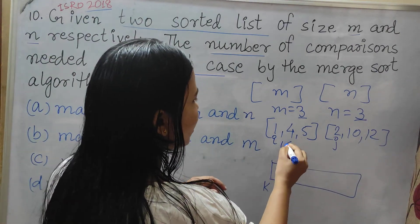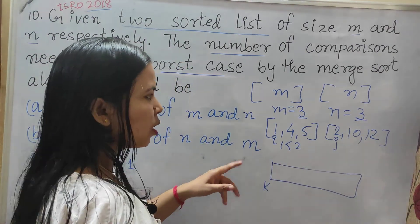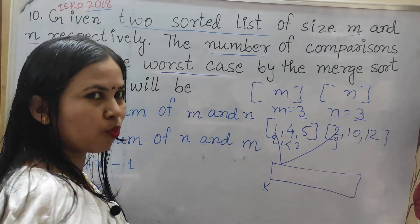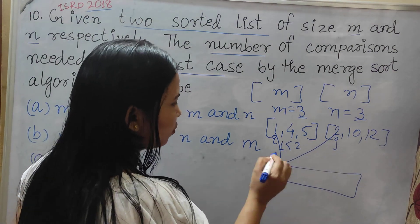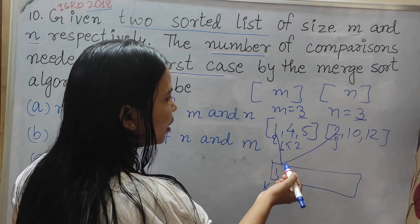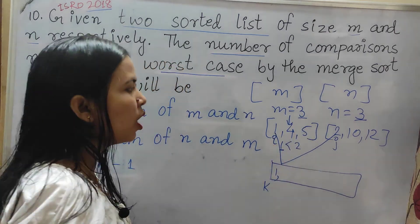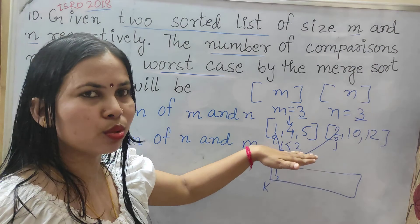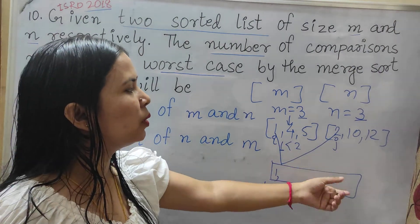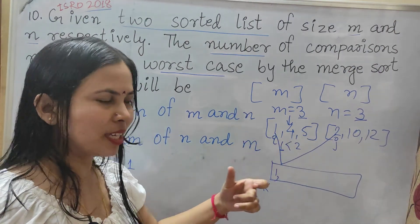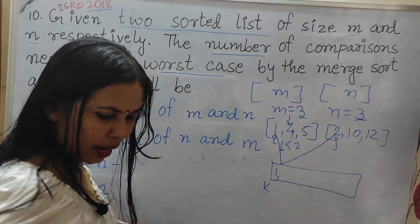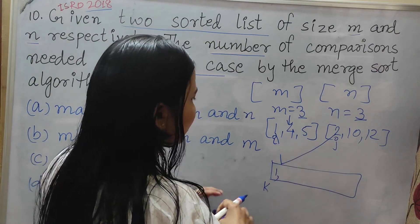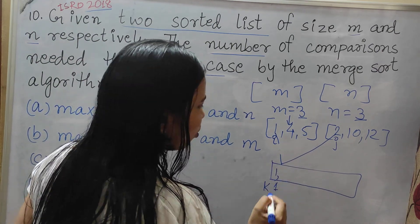Now, 1 is less than 2 — yes. We are comparing 1 time. 1 is lesser, so 1 is stored. Whenever we store from the I part, the I position is increased, and the other part remains in the same place. So here we are comparing 1 time.